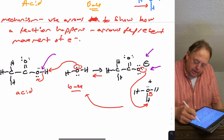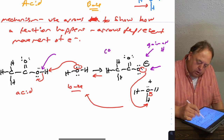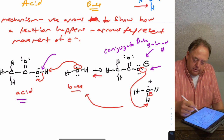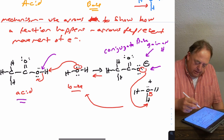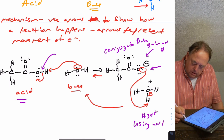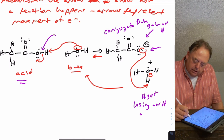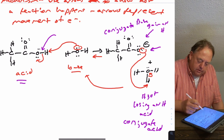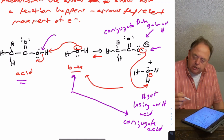Since the reaction is reversible, we classify the reverse reaction as well. This molecule is gaining the hydrogen in the reverse direction, so it's a base — often called the conjugate base. So the species on the left is the acid, and on the right is its conjugate base. Since H3O+ is losing the hydrogen, it's an acid — often called the conjugate acid. So the other species is the base, and H3O+ is its conjugate acid.